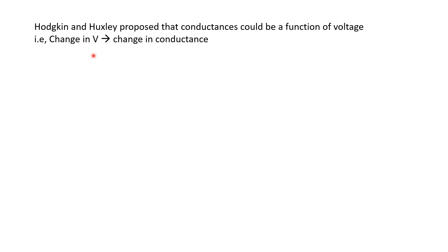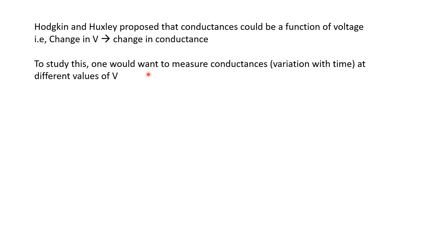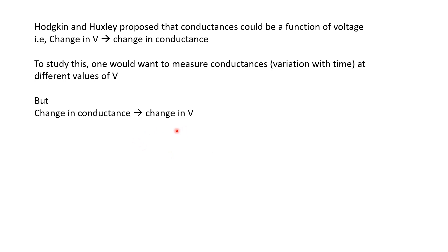If there is a change in the voltage of the neuron then we can see a change in these voltage-gated conductances. We would like to measure exactly how these conductances change for different values of voltage. If we could keep the voltage at a particular value and measure the conductances at that value, we could understand the dependence of conductance on voltage. But the problem is that as soon as the conductance changes, it in turn affects the voltage, so it is very difficult to maintain a steady voltage while conductances are changing.